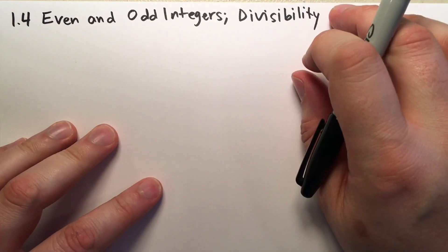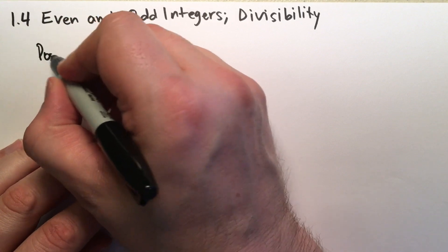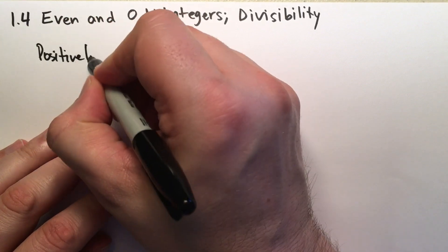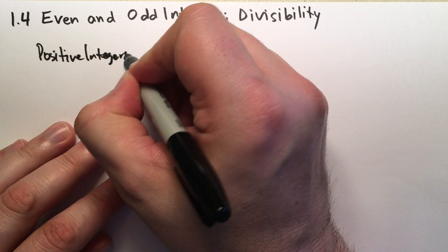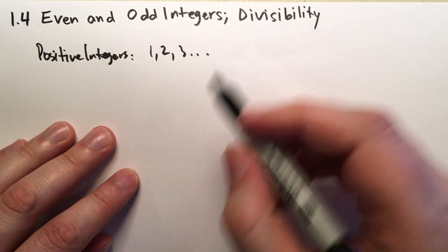Alright, so we first consider that the positive integers, let's remind ourselves what that means. These are all the numbers greater than 0 that are integers, so 1, 2, 3, etc.